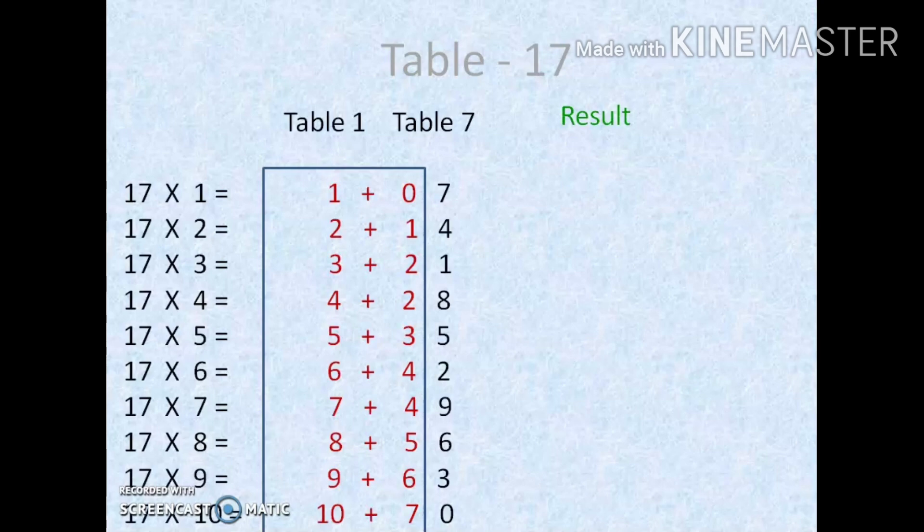Next step, what I am going to do is I am going to add the table 1 with the number in the tens place of table 7. That is, I am going to add 1 with 0 and I am going to write the remaining 7 as it is. So we get 17 1s are 17, 2 plus 1 is 3 and 4, so 34, 3 plus 2 is 5, 1 as it is, so we get 51.